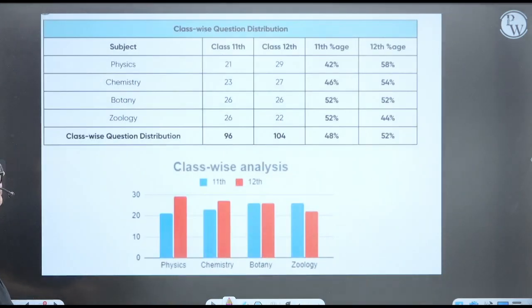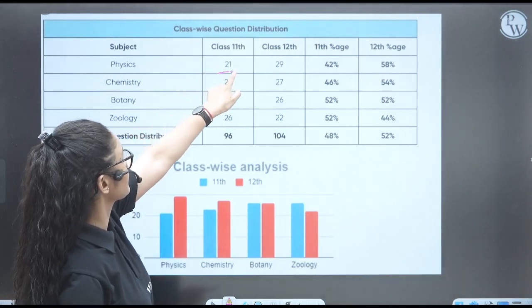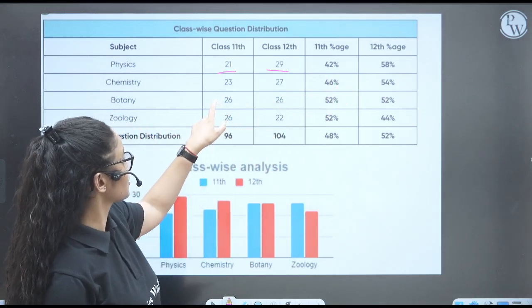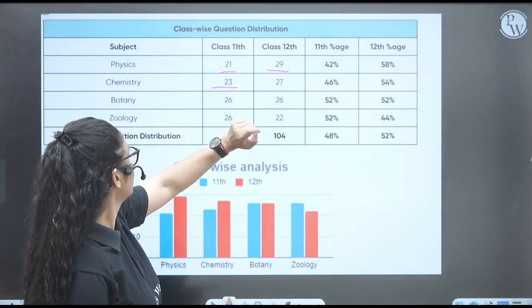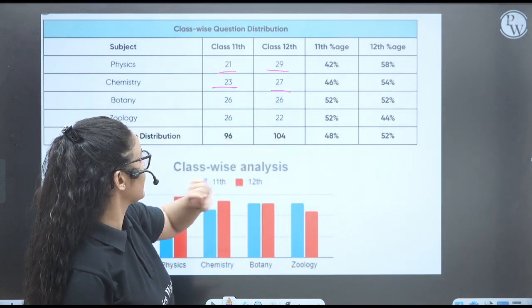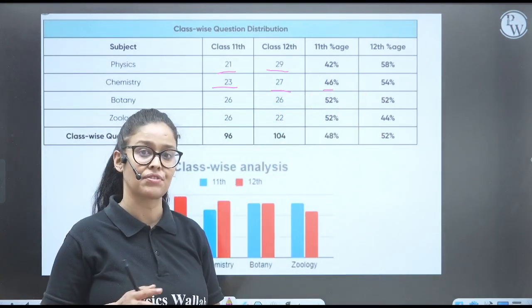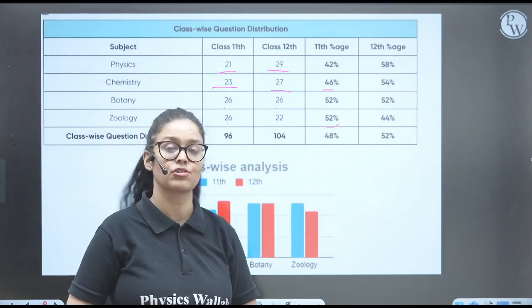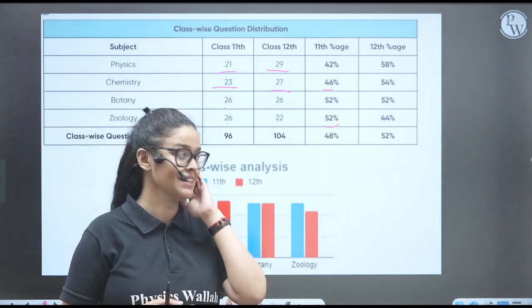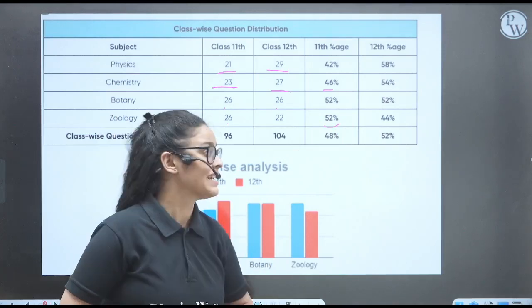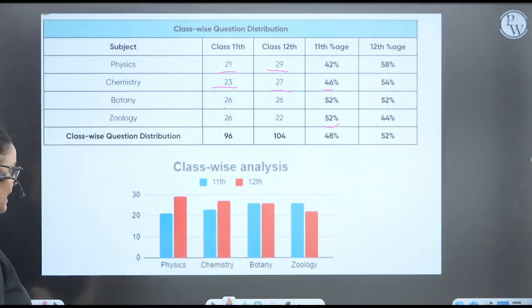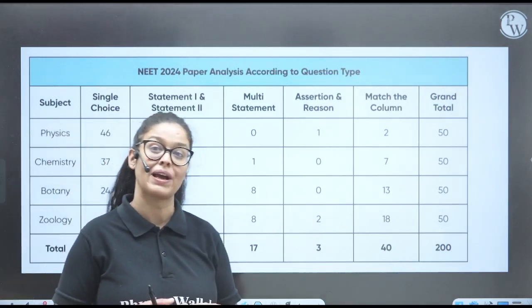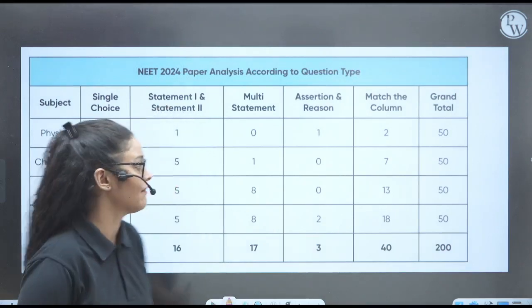So when we talk about the class-wise questions: from 11th class in physics we have 21 questions, from 12th 29 - total 58 percentage of 12th and 11th 42% syllabus. Chemistry: 23 questions from 11th and 27 from 12th, so overall 46, 54%. Botany and zoology: 26, 26 - 52, 52 equal. And from here, 11th class in zoology they have asked more questions from 11th and less questions from 12th itself, right? So you can see over here the percentage in physics and chemistry from 11th and 12th.